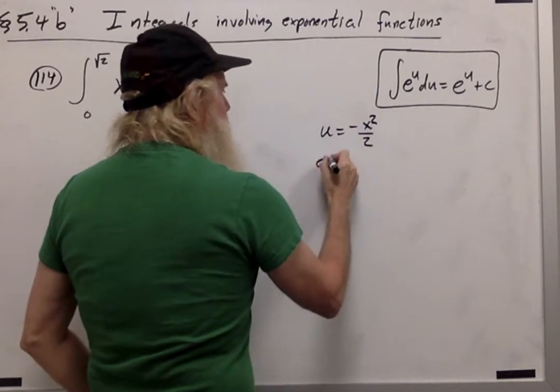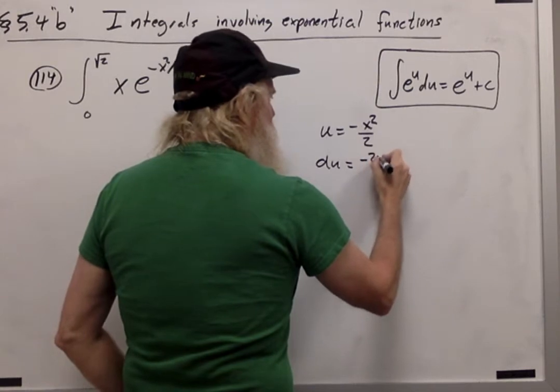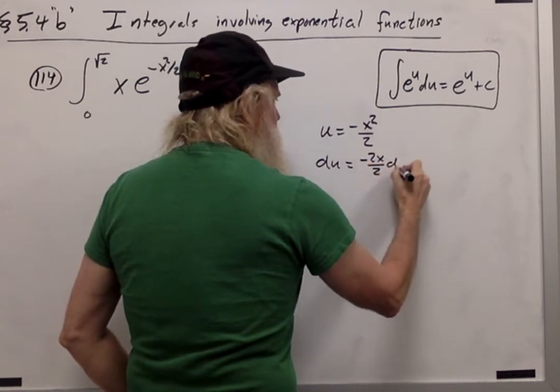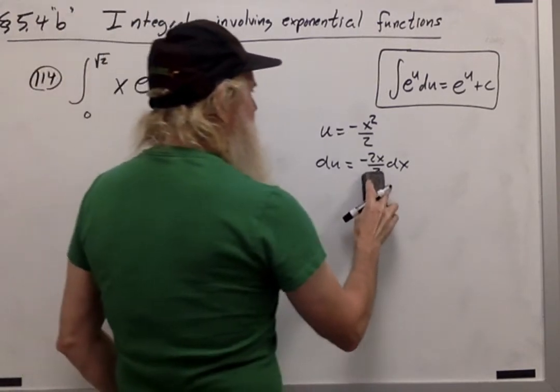So taking the differential of that, du will be negative 2x over 2 dx, which is just the same as negative x dx.